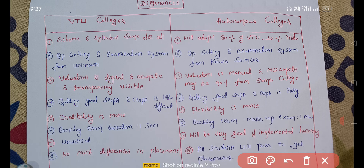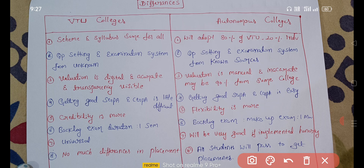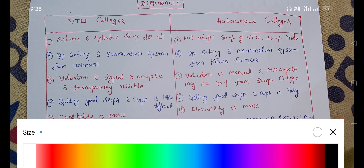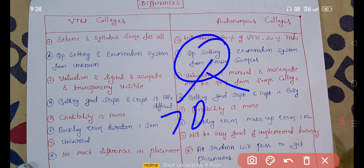For autonomous colleges, the question paper setting and examination system comes from known sources within the college. About 70 to 90% of the time, the question paper is set by someone from the same college, so the chances of familiarity are higher compared to VTU.